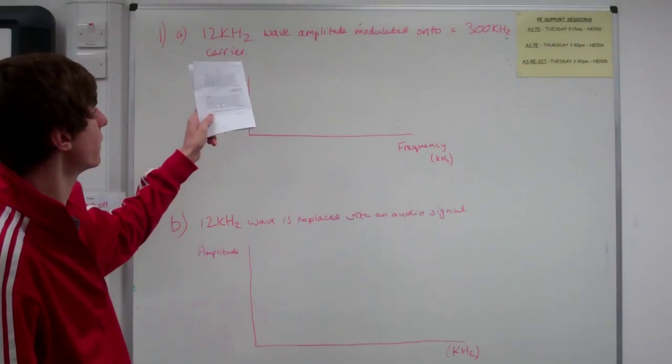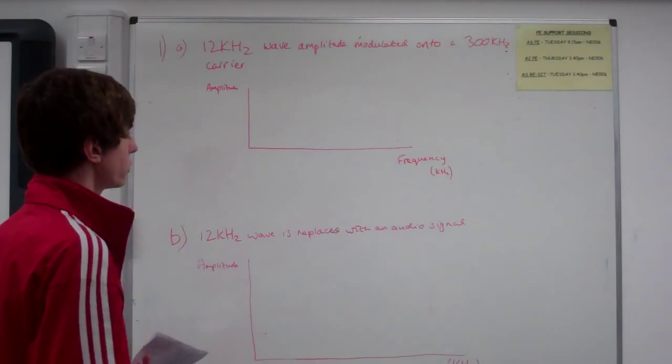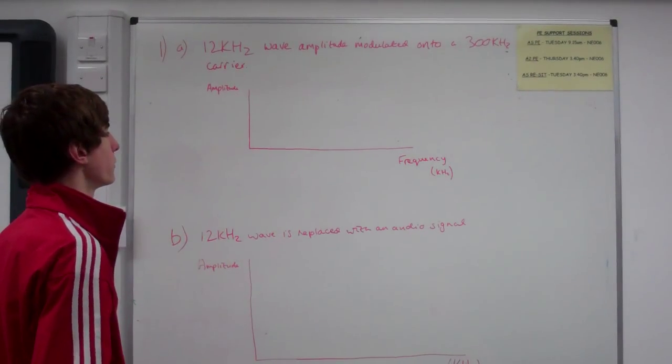A 12 kilohertz wave is amplitude modulated onto a 300 kilohertz carrier wave. The question is asking you to draw the frequency spectrum of that.